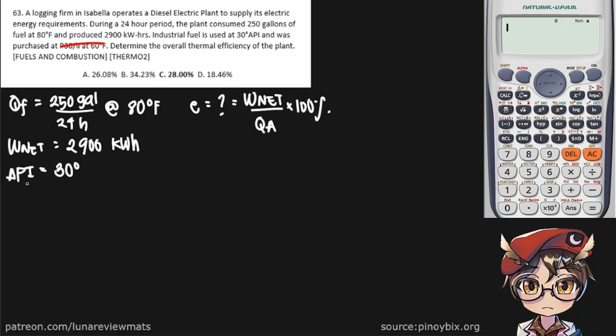So our first clue is the API. And we have the following formula for our API. And of course, put the value in, and we should get a specific gravity of 0.876 at 60 degrees Fahrenheit. So we do need to use our correction factor here.